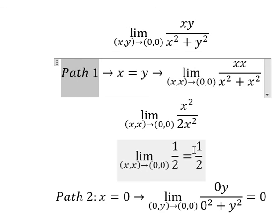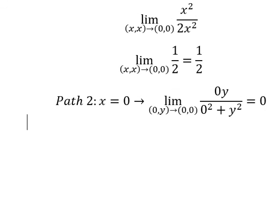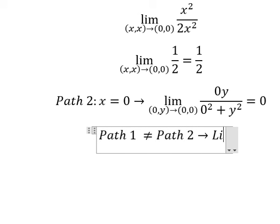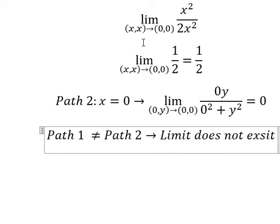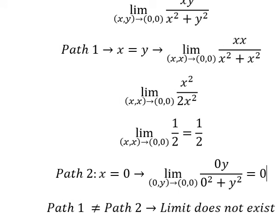We can see that path number one equals one over two. Path number two equals zero. So we can say that path one is not the same as path two, so the limit does not exist. This is the end, thank you for watching.